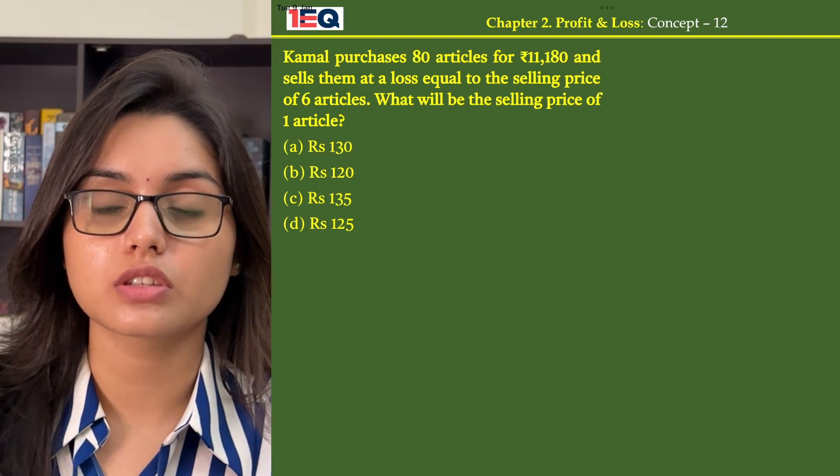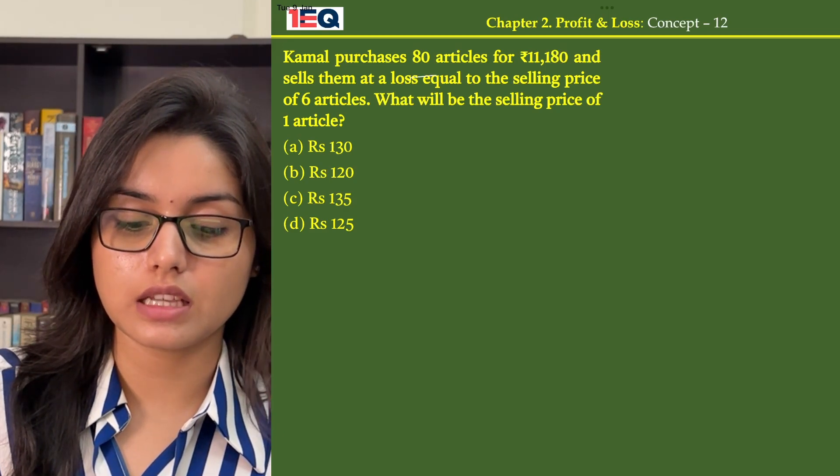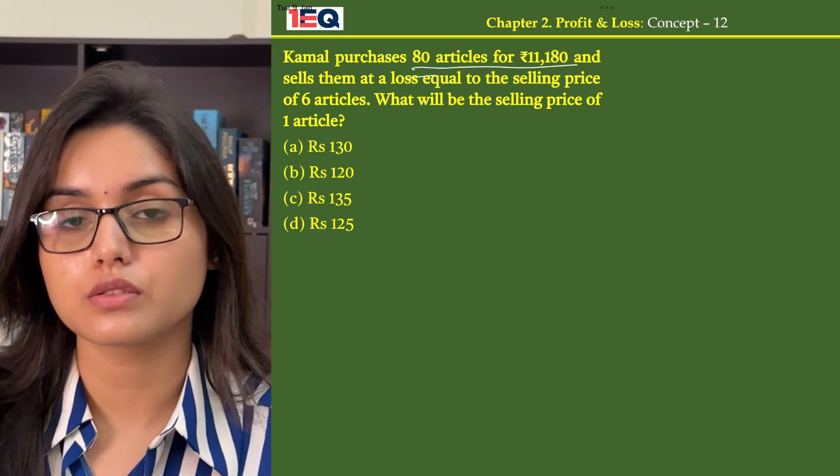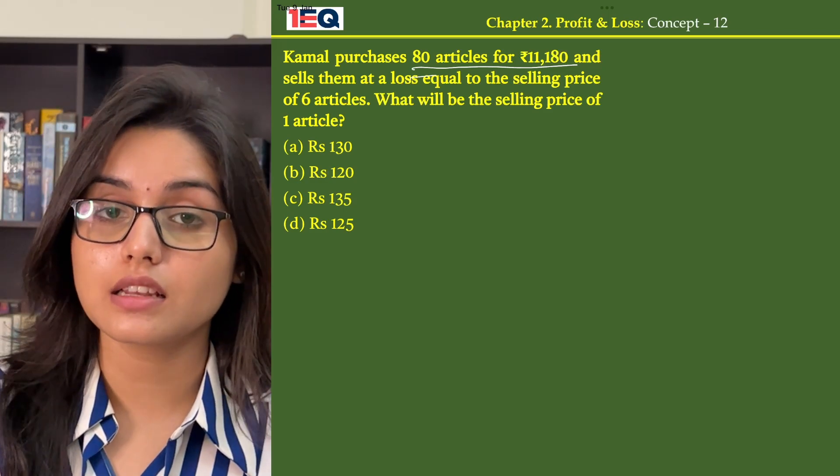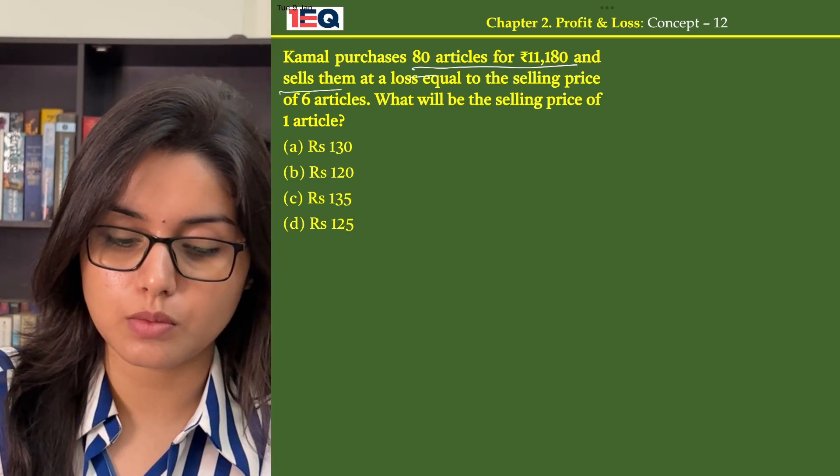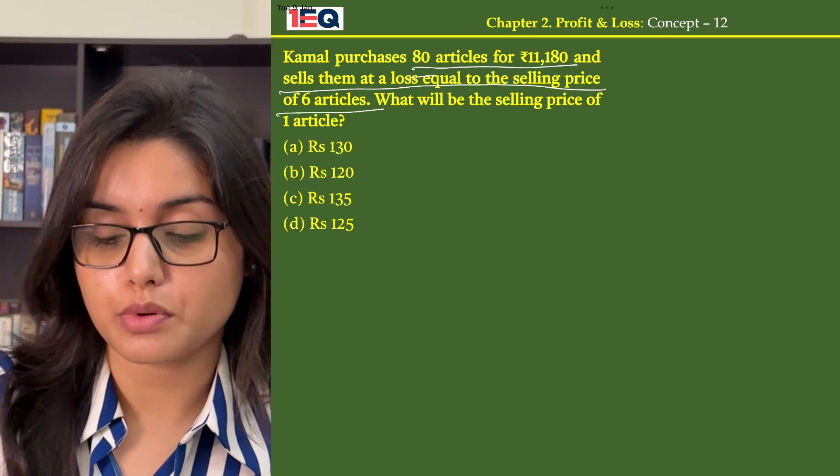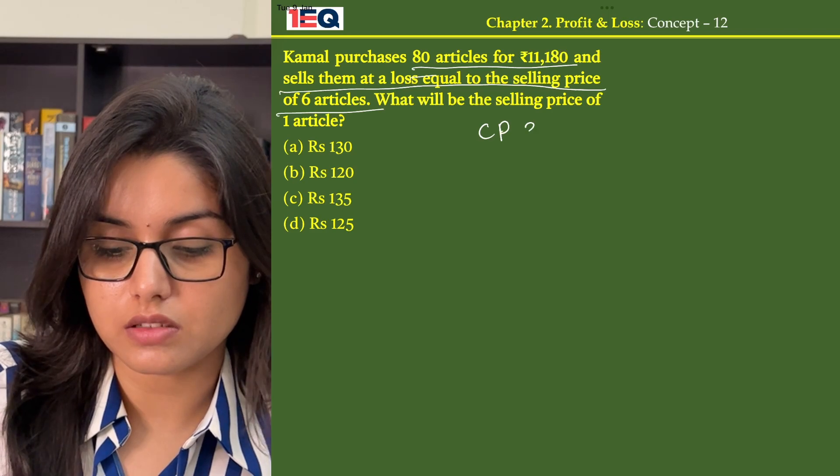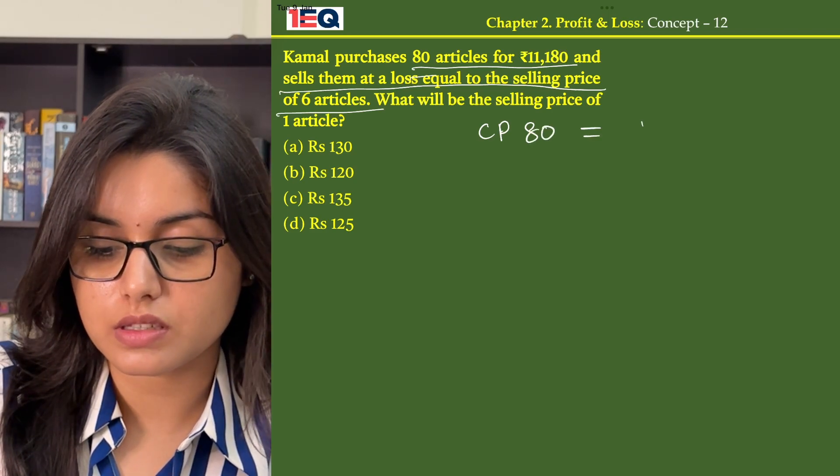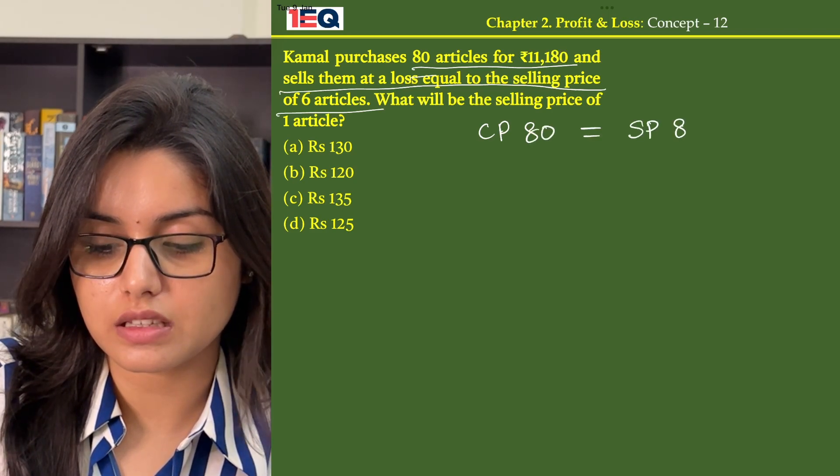In the given question, they have mentioned that Kamal purchases 80 articles for Rs 11,180 and then he sells them at a loss equal to the selling price of 6 articles. Which means the cost price of 80 articles is equal to the selling price of 86 articles.